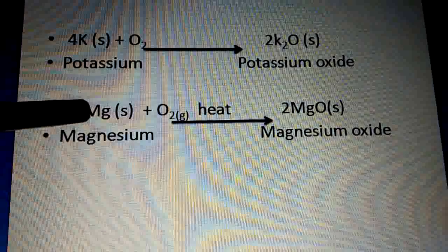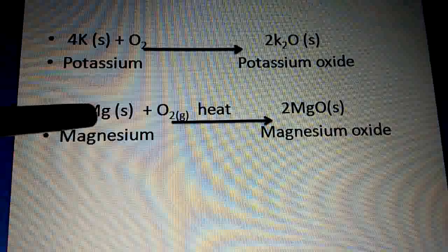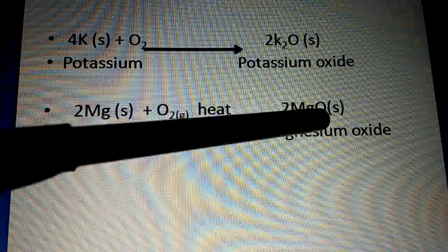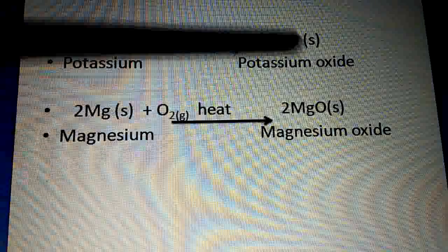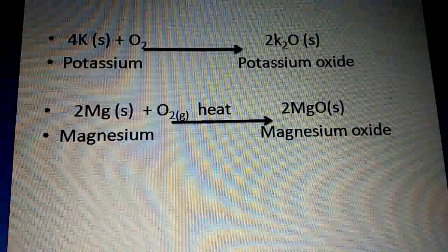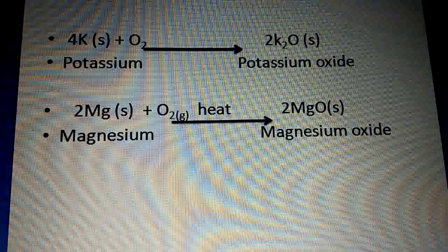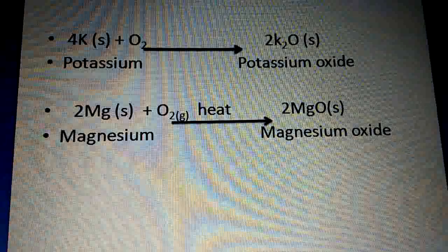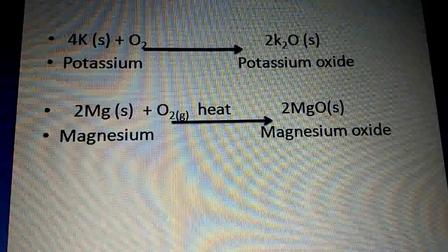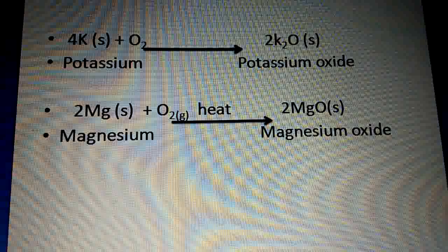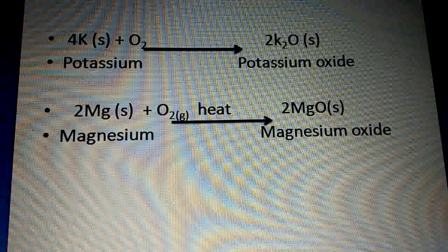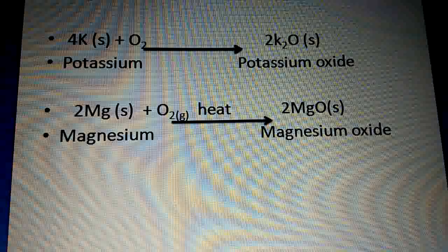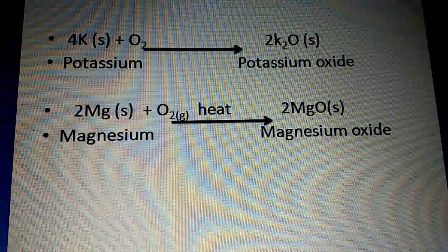Another example: magnesium. Mg + O₂ → MgO (magnesium oxide). When metals react with oxygen they form metal oxides. These are some examples of metals reacting with oxygen.